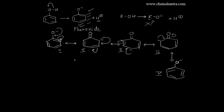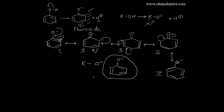So in total, phenoxide ion has five resonating structures — that's the beauty of the phenoxide ion. If you compare it with the alkoxide ion, there is no conjugation and no resonance possible there. On the other hand, the phenoxide ion has a benzene ring, which makes resonance possible, giving it extra stability. This extra stability of the phenoxide ion compared to the alkoxide ion is exactly why phenol has much greater acidity than alcohol.